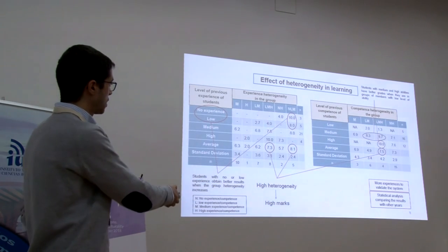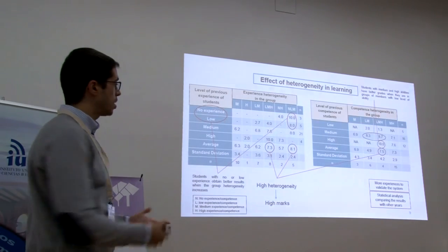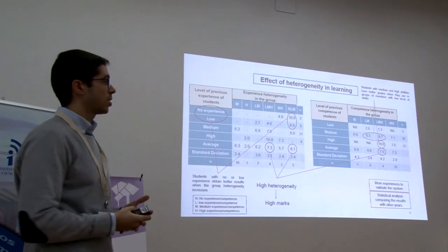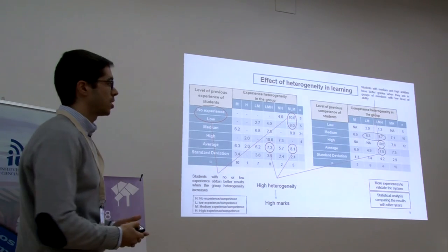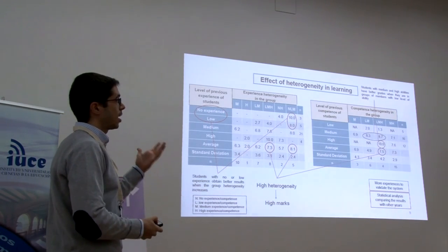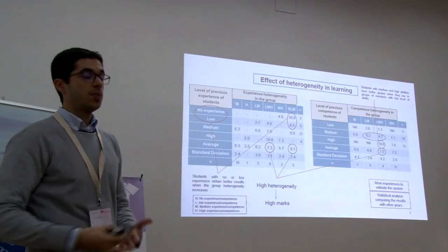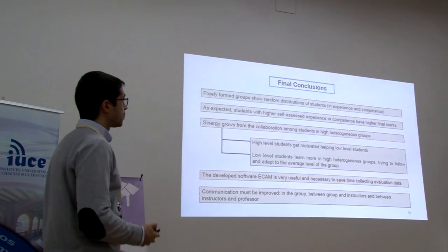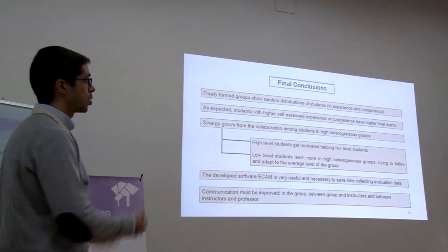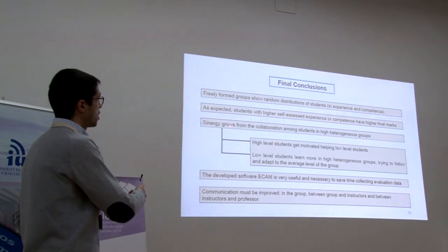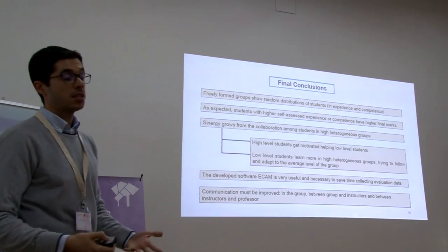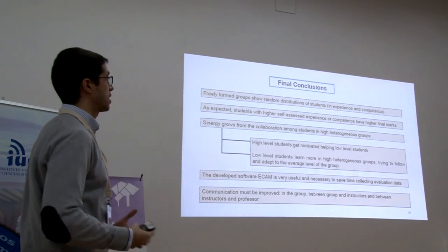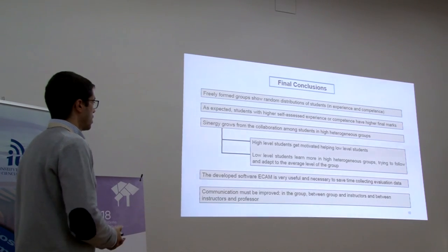The most important results are summarized in these tables. Basically, high heterogeneity seems to produce higher grades. We believe this is because students who are initially at a low level get motivated to reach the average of the group. And students at a high level — as you can see here — end up with better grades because they teach the lower-level students and get motivated through teaching. Synergy grows from collaboration, which was the main purpose of this study: to see that collaboration between students results in better marks and overall better learning.